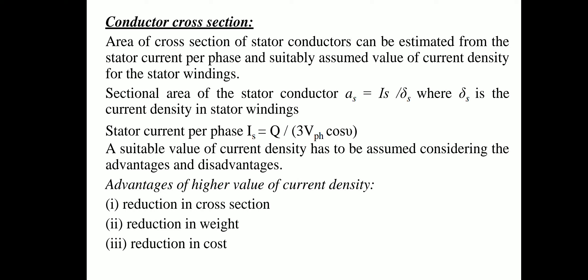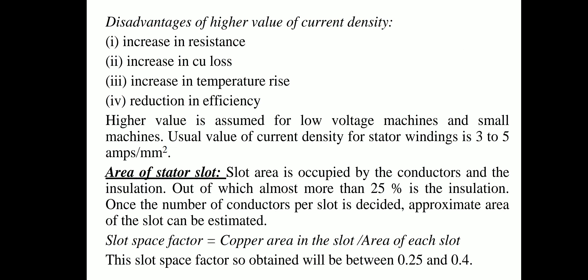A suitable value of current density must be assumed considering advantages and disadvantages. Advantages of higher current density: reduction in cross-section, reduction in weight, reduction in cost. Disadvantages: increase in resistance, increase in copper losses, increase in temperature rise, and reduction in efficiency. Higher values are assumed for low voltage and small machines. The usual value of current density for stator winding is 3 to 5 A/mm².